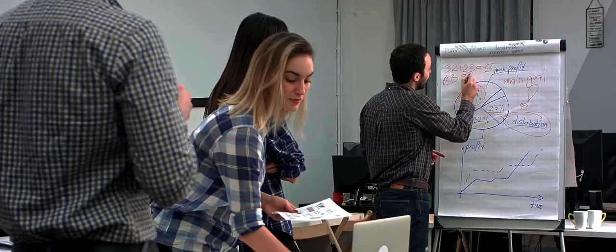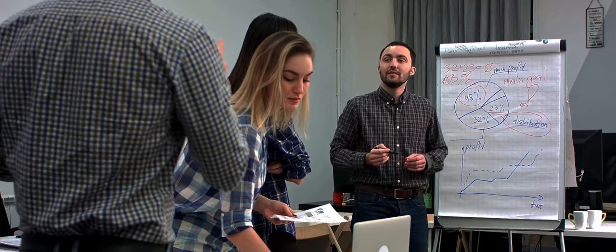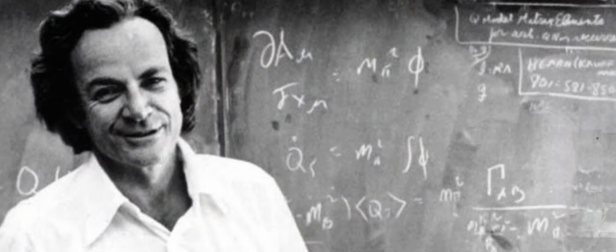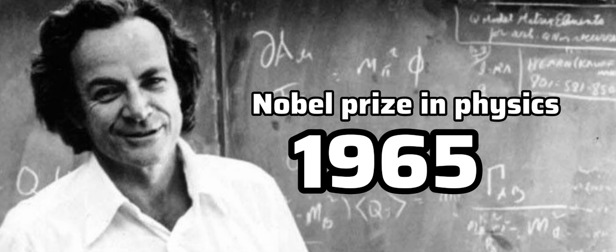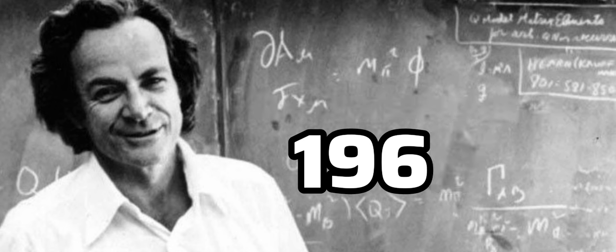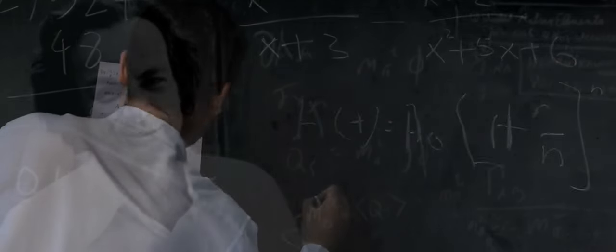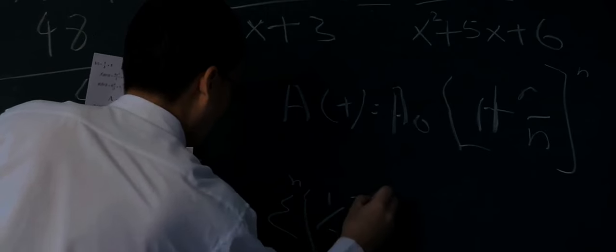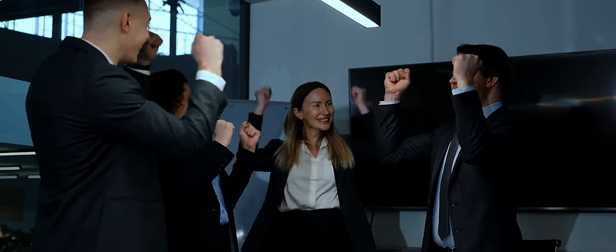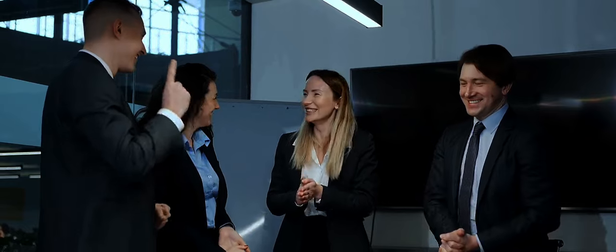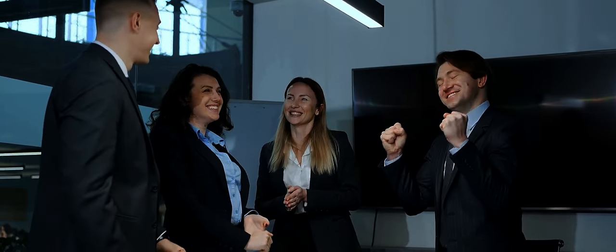They shape our understanding, guide our reasoning, and lead us to solutions. Consider the case of Richard Feynman, a brilliant physicist whose unique mental model earned him the Nobel Prize in Physics in 1965. Feynman's mental model, known as differentiating under the integral sign, was his secret weapon for tackling problems that left even math PhD students stumped. This story illustrates the power of mental models — they're not just theoretical constructs, but practical tools that can guide us to breakthrough insights.